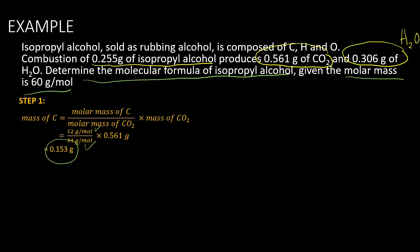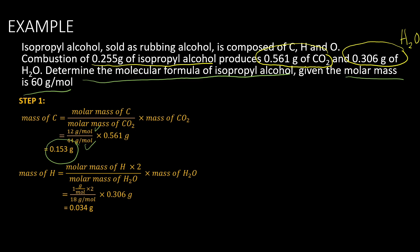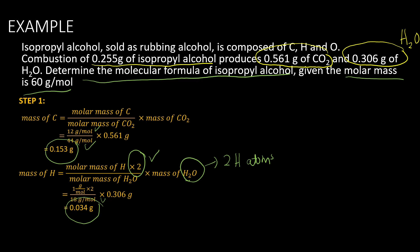To find the mass of hydrogen, we use: molar mass of hydrogen multiplied by 2, divided by the molar mass of water, then multiplied by the mass of water. We multiply by 2 because there are 2 hydrogen atoms in one water molecule. The molar mass of hydrogen is 1 g/mol, multiplied by 2, divided by the molar mass of water, 18 g/mol, then multiplied by the mass of water, 0.306 grams. This gives us 0.034 grams — the mass of hydrogen.